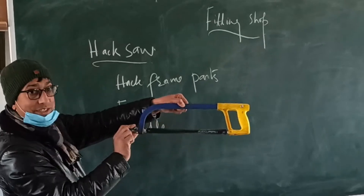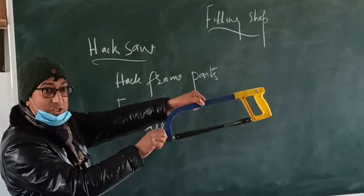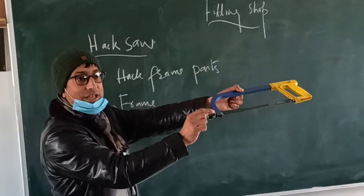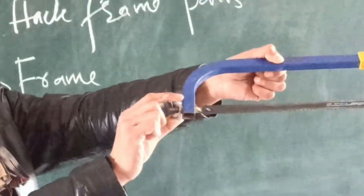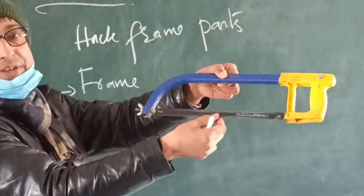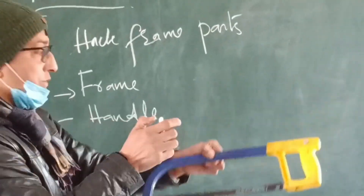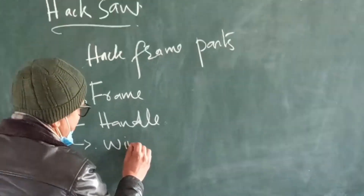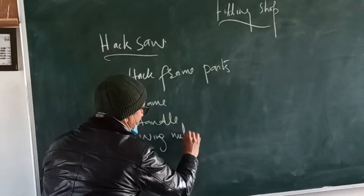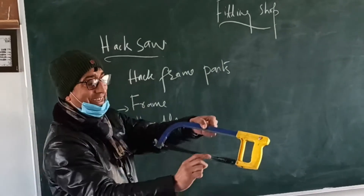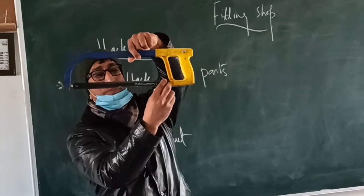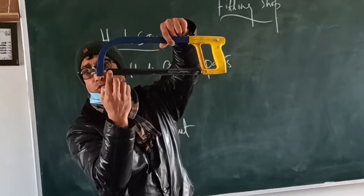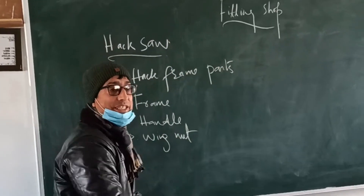So this wing nut is used to tighten or loosen the blades. And there is one more part where we fix the blade — that portion is called the stud.